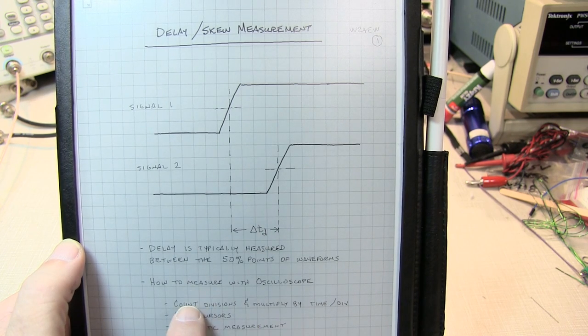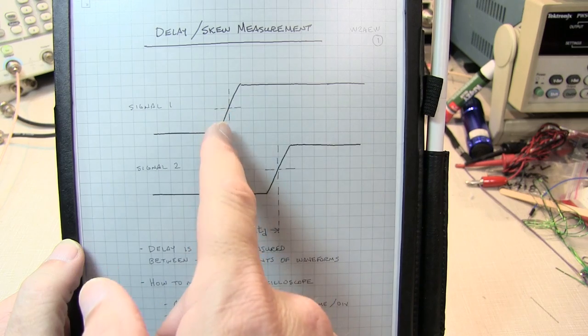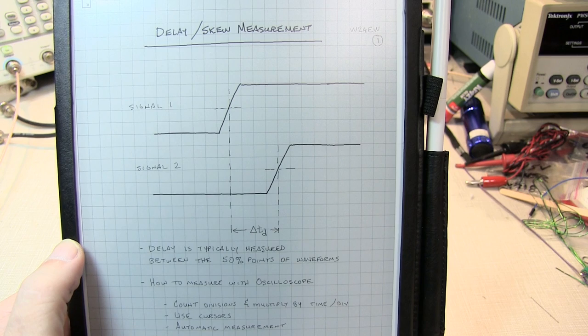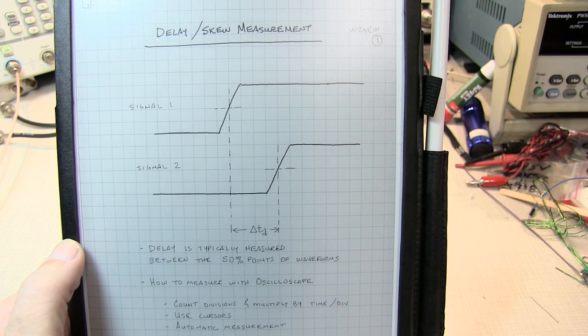When making this measurement on an analog oscilloscope, you typically would just count the number of divisions that exist on the scope screen between the two edges, and then multiply that by the time per division sweep speed of the scope.